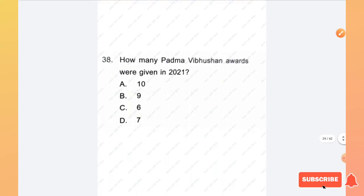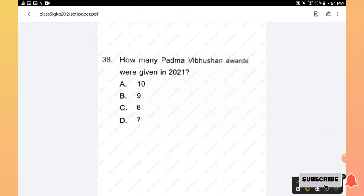Question number 38: How many Padma Vibhushan Awards were given in 2021? Options are 10, 9, 6, 7. The right answer is option D, 7.